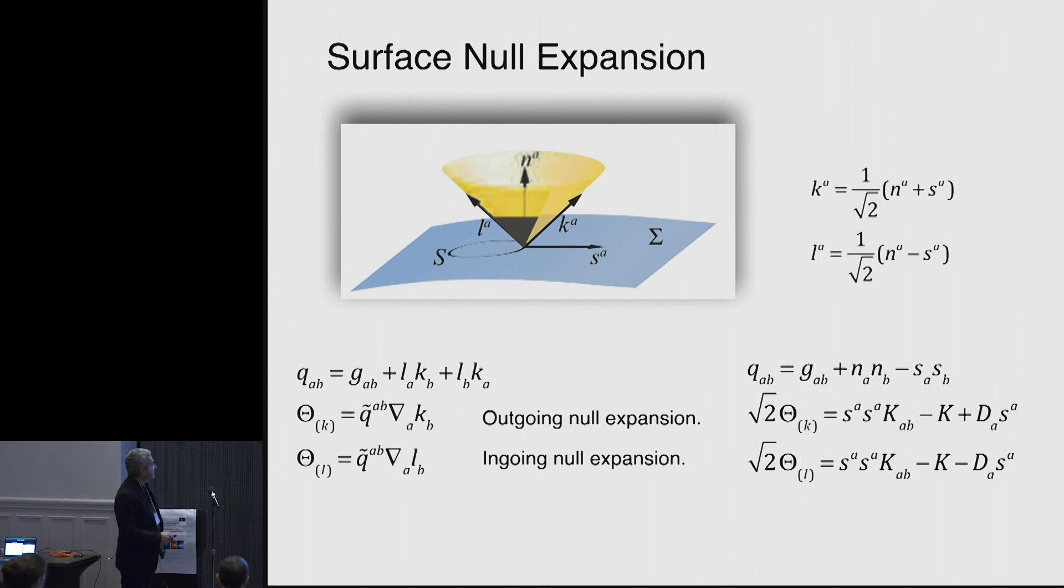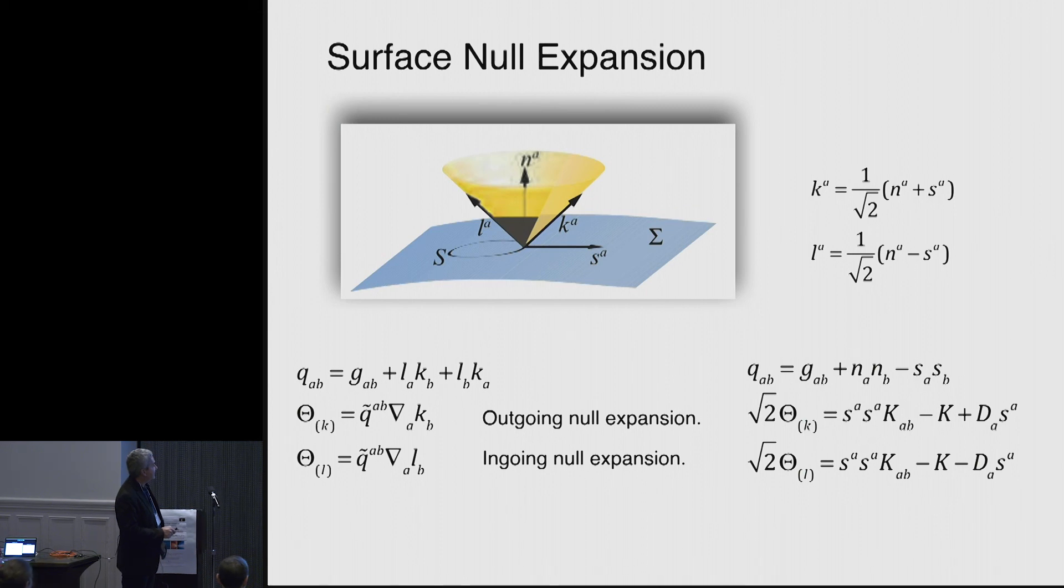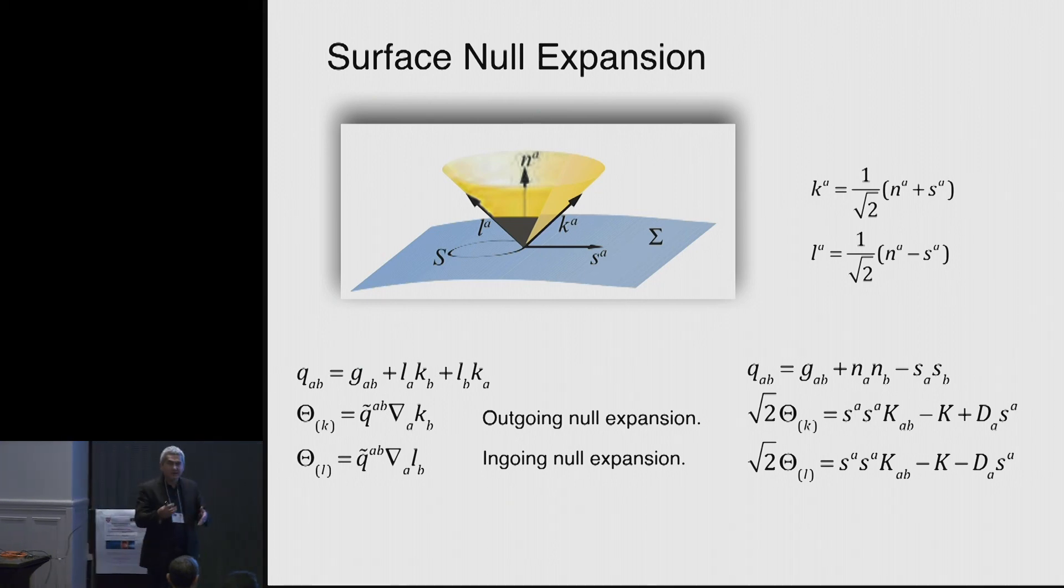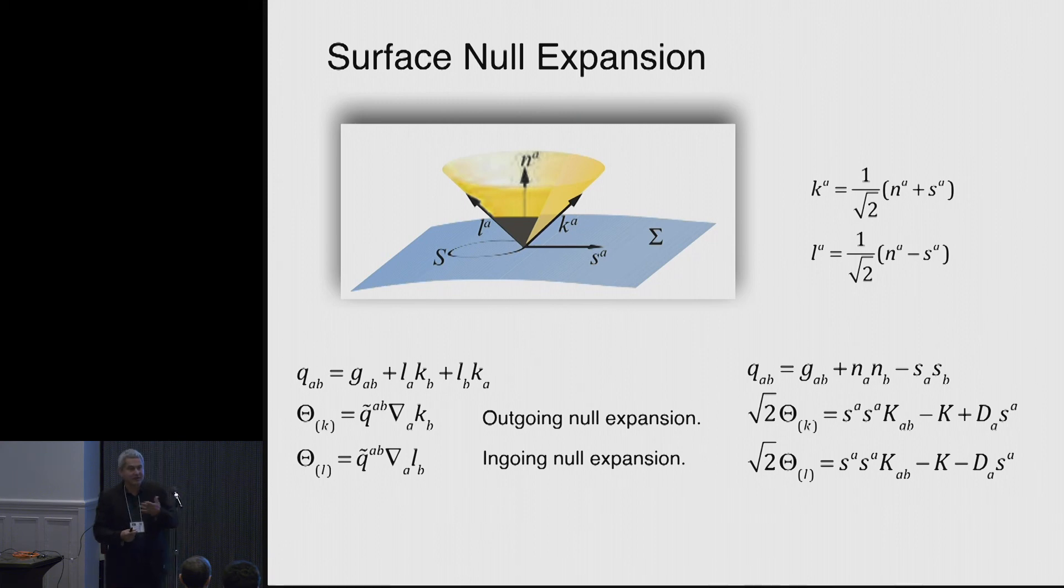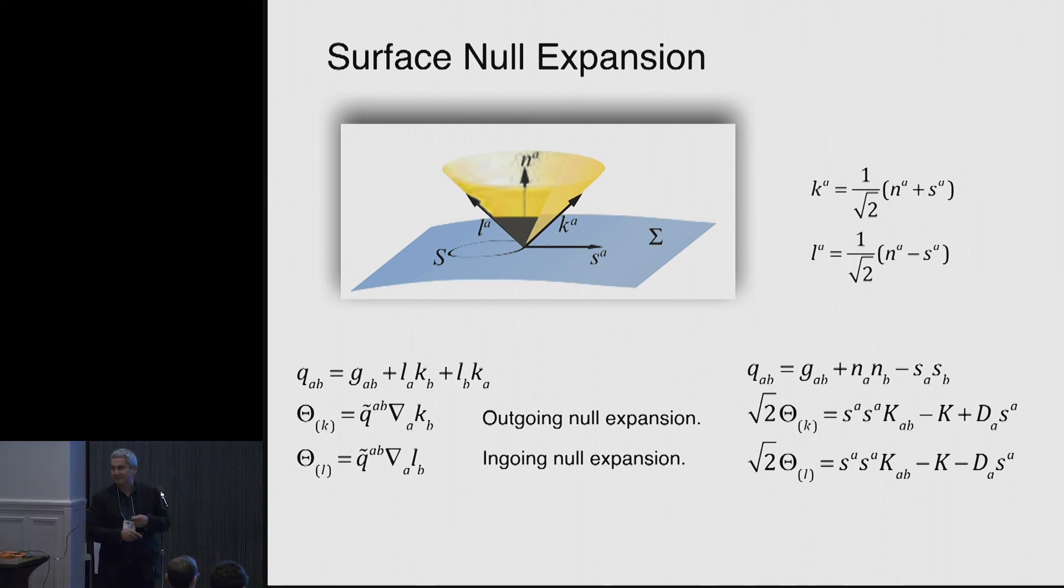So that is the normal s in that hypersurface to the sphere, and the normal n to the hypersurface itself. And those are quantities that we evolve in the code. So that is a nice thing that we don't have to do anything else. On the fly, we just compute these expansion factors and that's it.